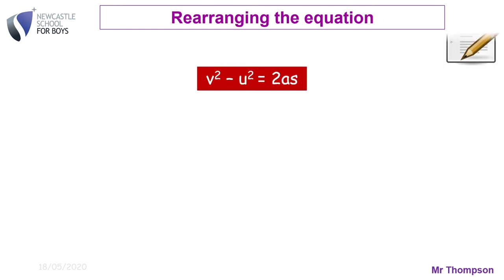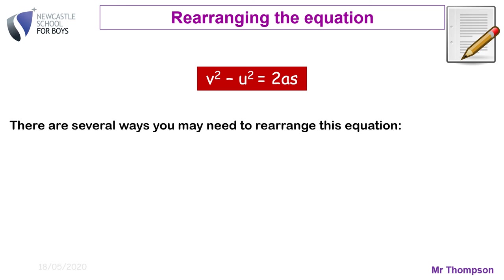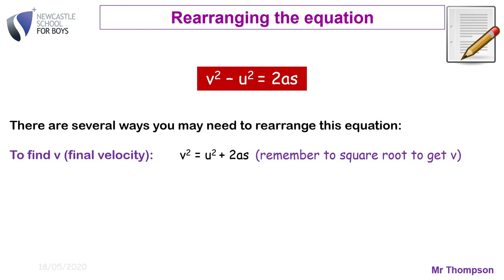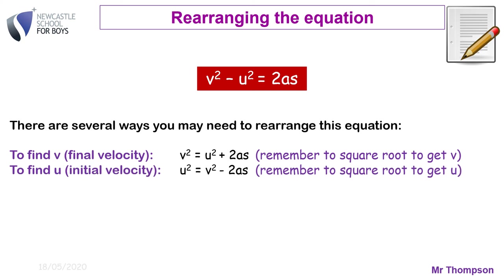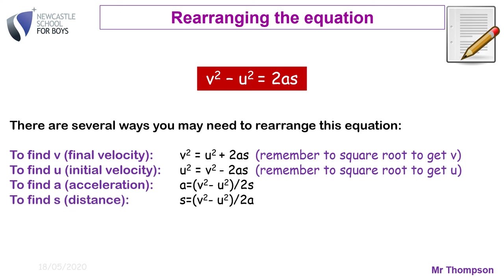For the higher paper you may need to rearrange this equation. If you want v², add u² to each side. If you want u², do a similar rearrangement. If you want a, divide each side by 2s. If you want s, divide each side by 2a. Write these in your book and work out how to derive them — you don't need to memorise them, but do learn how to rearrange this equation.